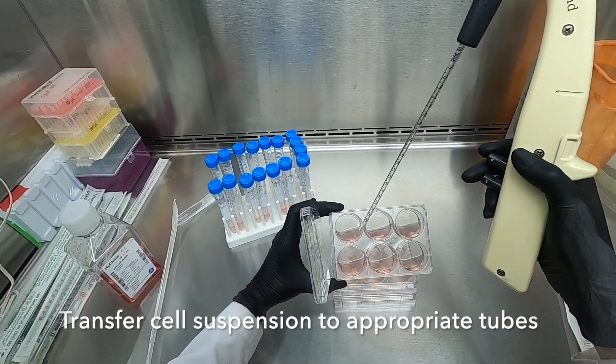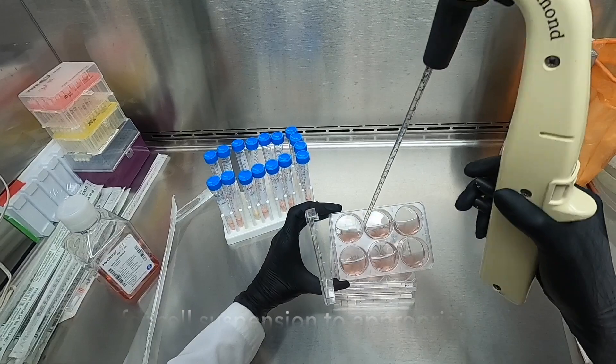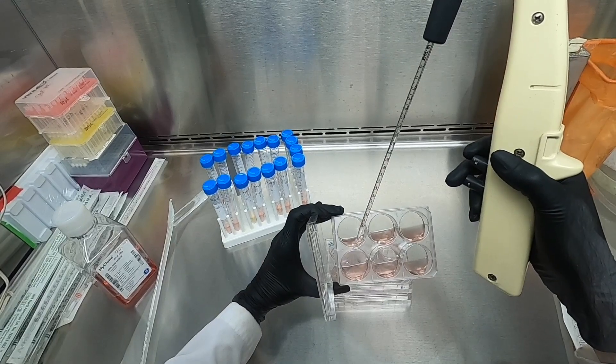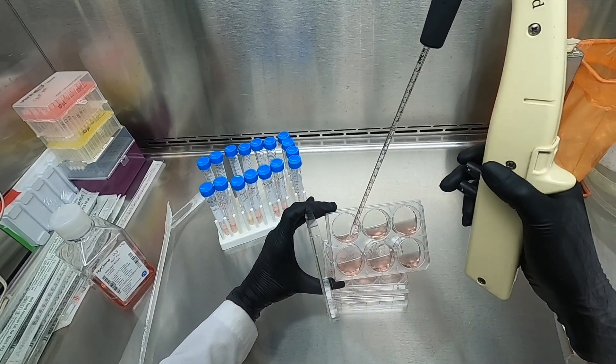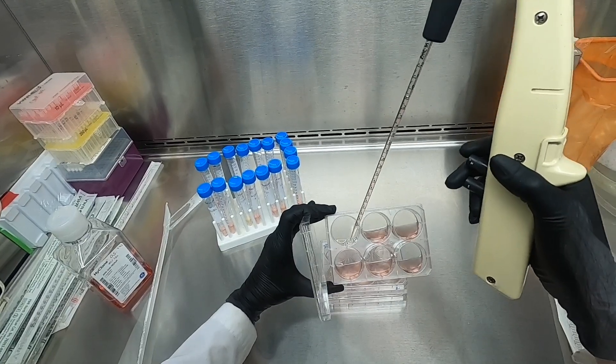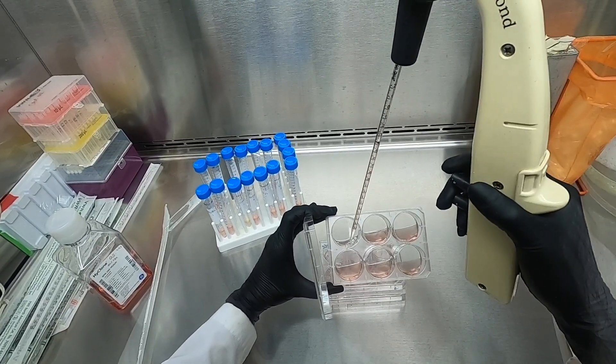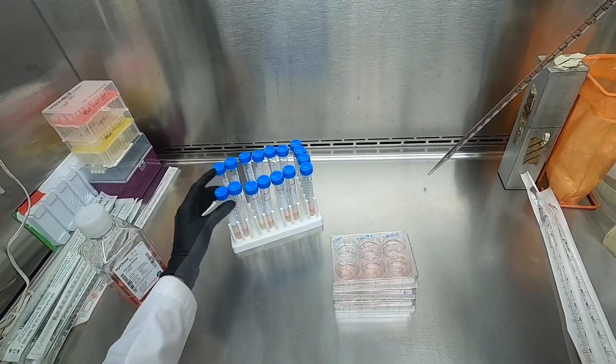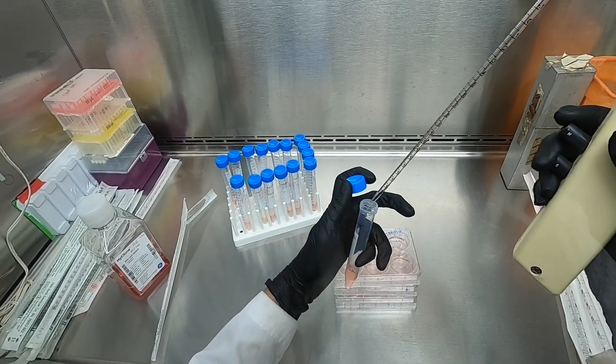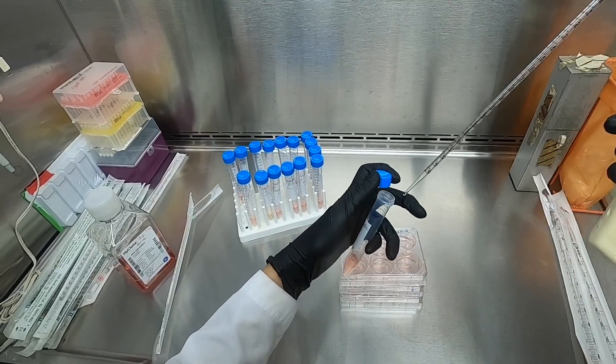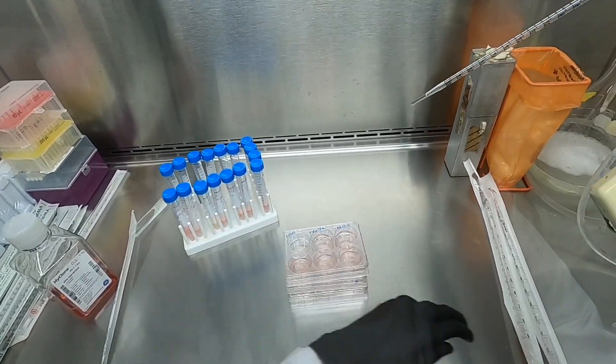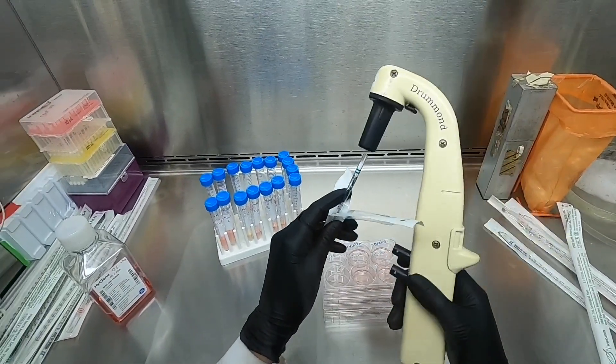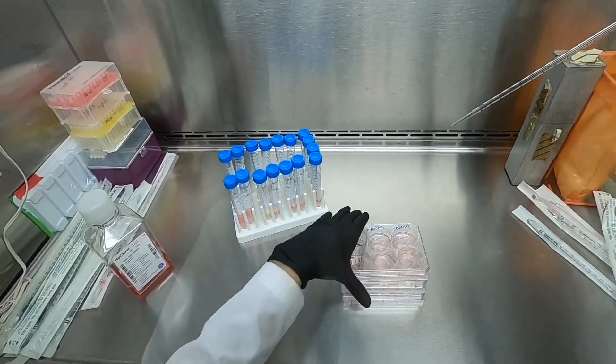After all cells are detached from the plate, we will transfer each well to the appropriately labeled tube. Here, we are rinsing each well with a media in order to rinse off any cells that may remain attached to the surface. We will repeat the same procedure with every single well, making sure that we gather as many cells from each well as possible.